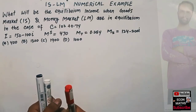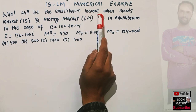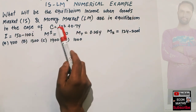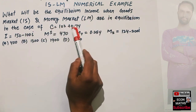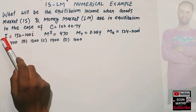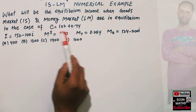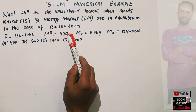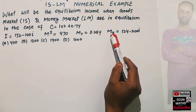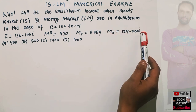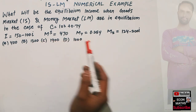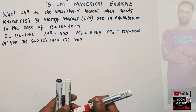In this video we will solve a numerical problem on the IS-LM model. The question is: what will be the equilibrium income when the goods market (IS) and money market (LM) are in equilibrium? Given: consumption C = 102 + 0.7Y, investment I = 150 - 100i, money supply = 470 (exogenous), transaction demand for money = 0.25Y, and speculative demand = 124 - 200i. The options are 400, 1300, 1900, or 1000.